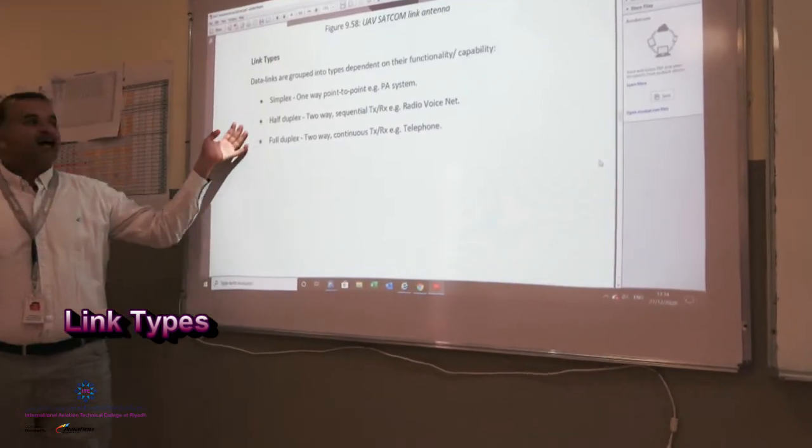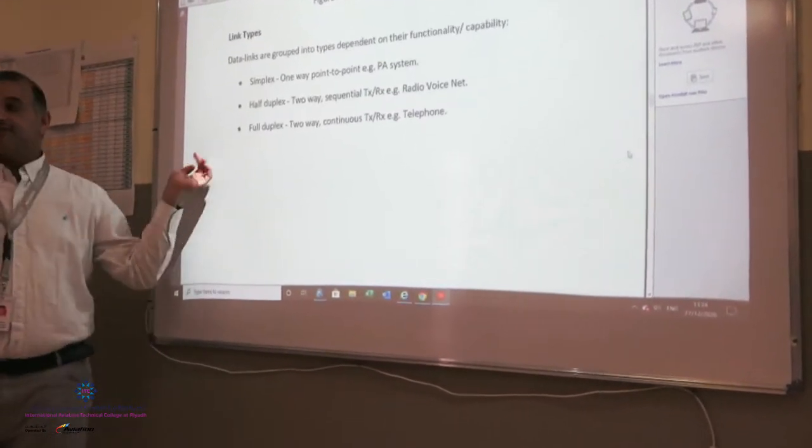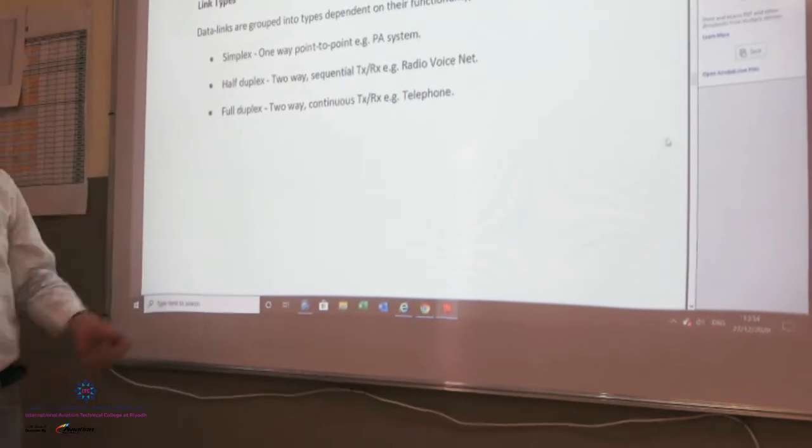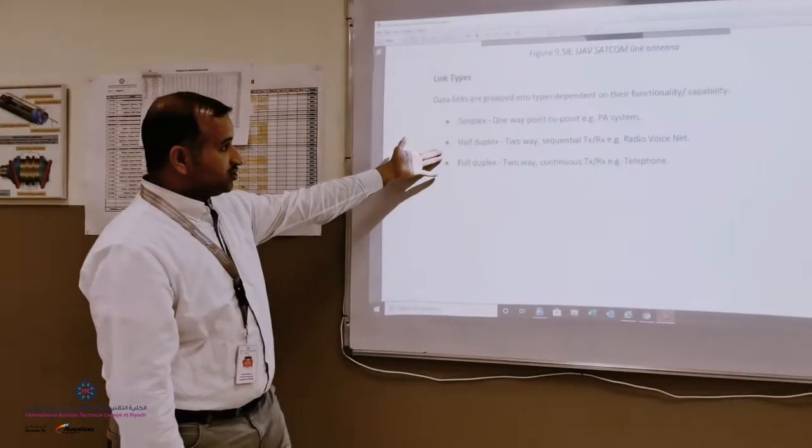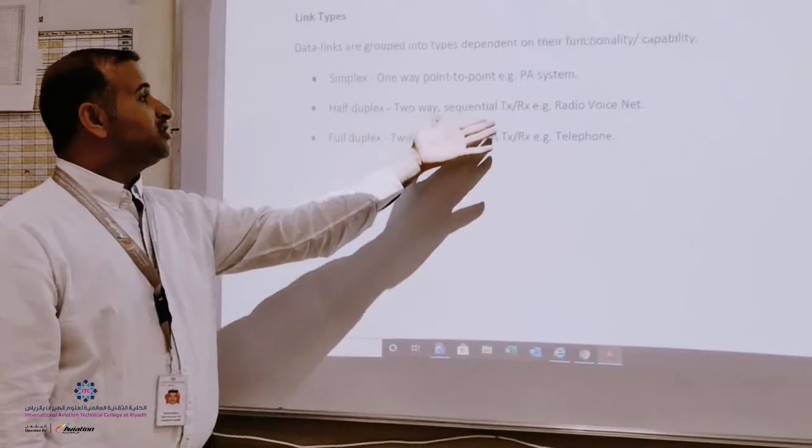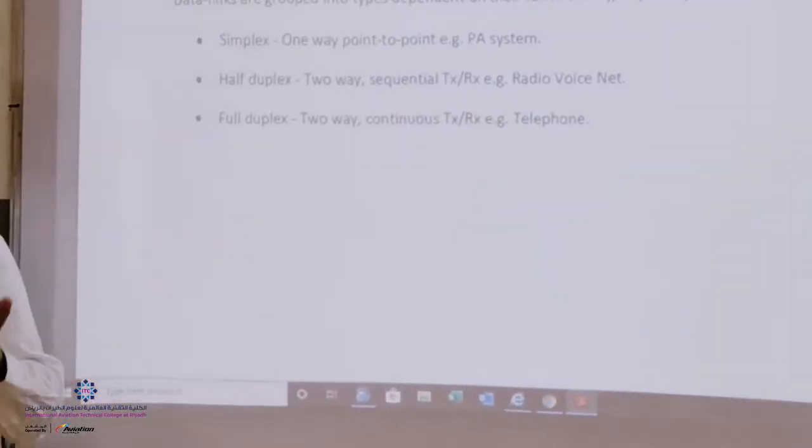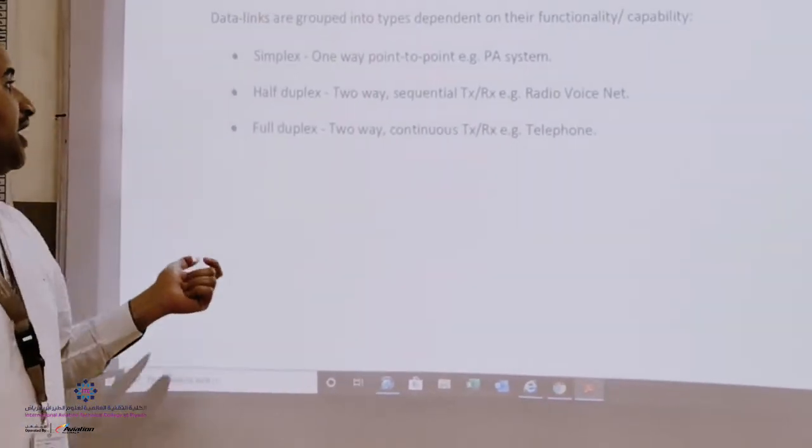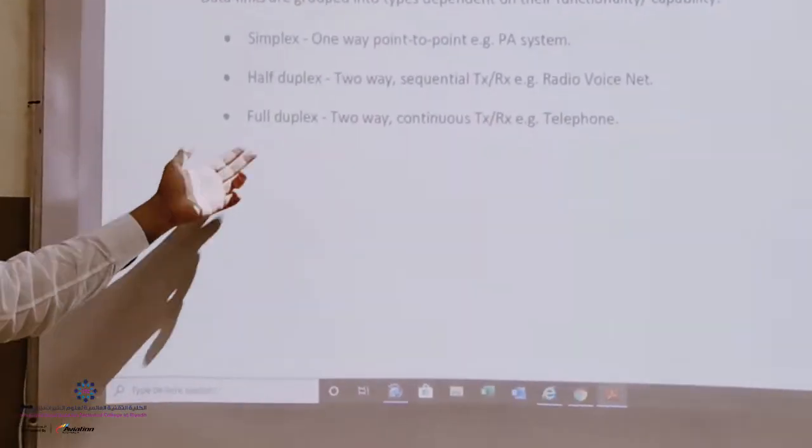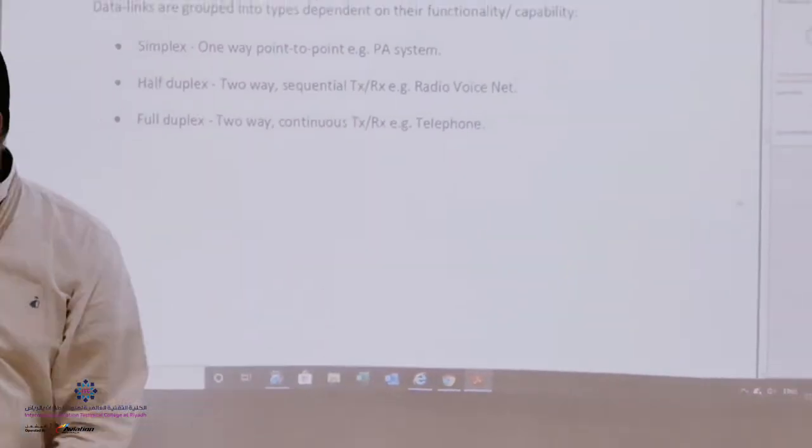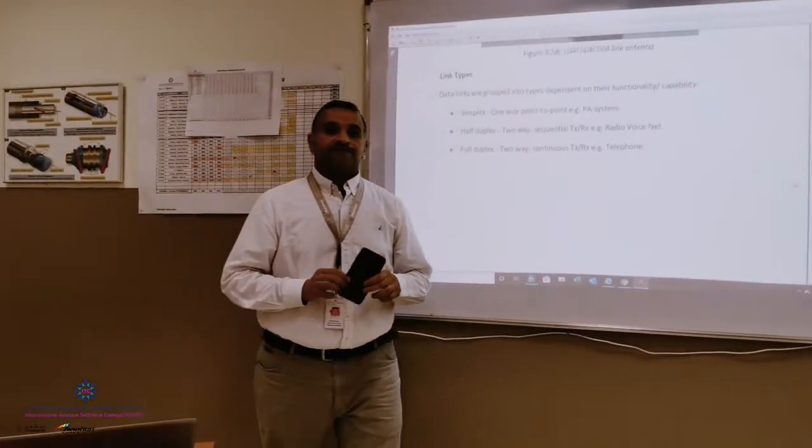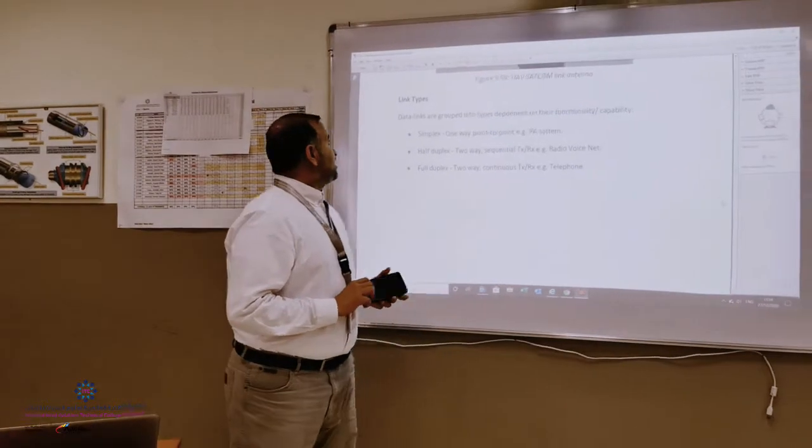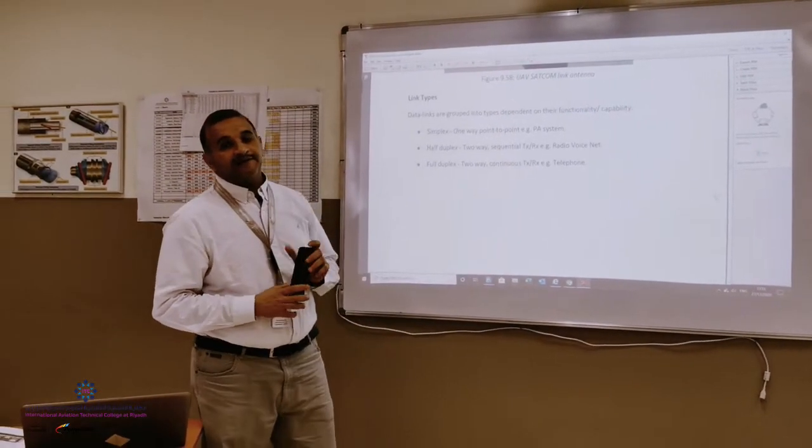Three basic simple link types: simplex from one point to another point, half duplex which is two-way sequential like a handheld radio for example, and full duplex which is two-way continuous, for example your phone. These are the link types, the simple link types.